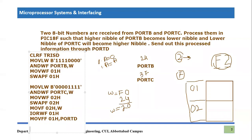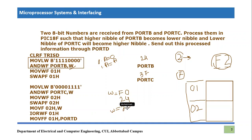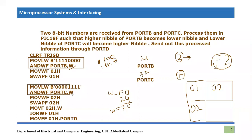Then we use MOVWF to move this value (20h) into file register 01h. After that, we apply SWAPF on file register 01h. Swapping the nibbles of 20h gives us 02h. This value is now stored in file register 01h.